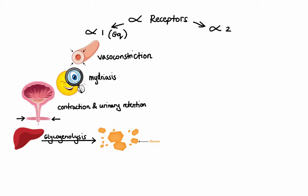Alpha-1 receptors are also found in the kidney, and when activated there, they lead to inhibition of renin release. As a reminder, renin is an enzyme secreted by the kidney and is involved in the regulation of blood pressure. In summary, activation of alpha-1 receptors leads to a sympathetic response. When you are in fight-or-flight mode, it's advantageous to have constricted blood vessels in case you start bleeding, to retain urine when fighting or running away, and you definitely need extra glucose.